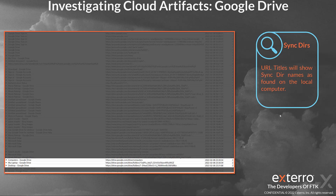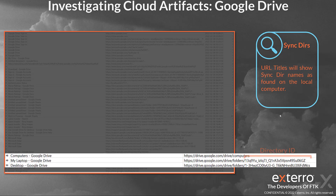Sync directories can be very informative. If the user has browsed their sync directories within the web interface of Google Drive, it's going to show up in the URLs. For example, you can see they went to 'computers,' they have one computer called 'my laptop,' and then they went to one of their shared directories — 'desktop' — indicating they're syncing their desktop with Google Drive. Looking more closely at these URLs, we also notice a directory ID associated with these synced directories, which will be important when validating these locations against artifacts elsewhere on the computer.